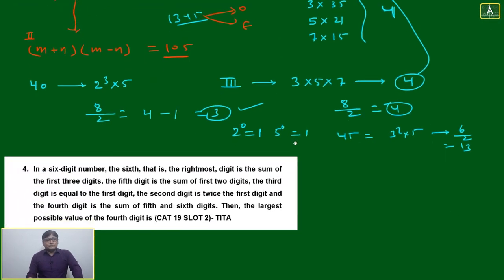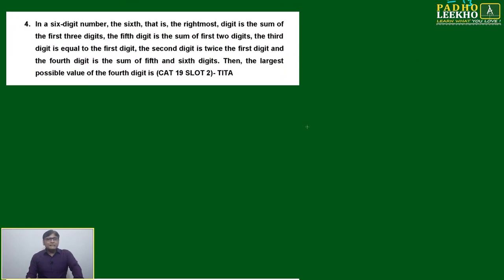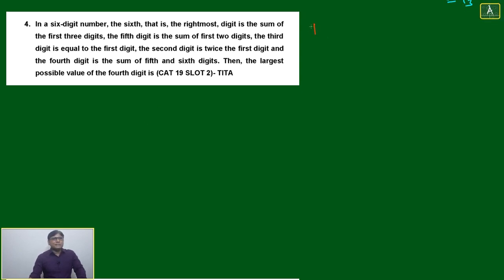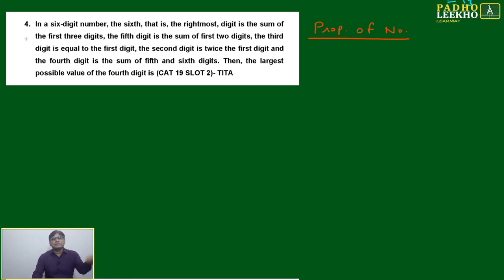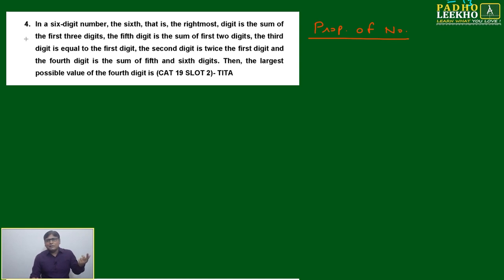After developing all these techniques, we will be able to get the best percentile in CAT. Now we'll come to question number four. Question four is word-based and looks very complicated, but can we apply properties of numbers here? Yes — this is again based on properties of numbers. The digits of the number are interrelated with the properties of numbers.